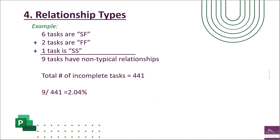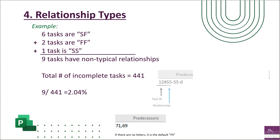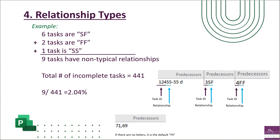Here's what to look for in project software. Predecessors with a finish-to-start relationship just show the task ID. If it's a start-to-start, you'll see the task ID followed by SS. If it's a start-to-finish, you'll see SF after the task ID. If it's a finish-to-finish, you'll see FF after the task ID.